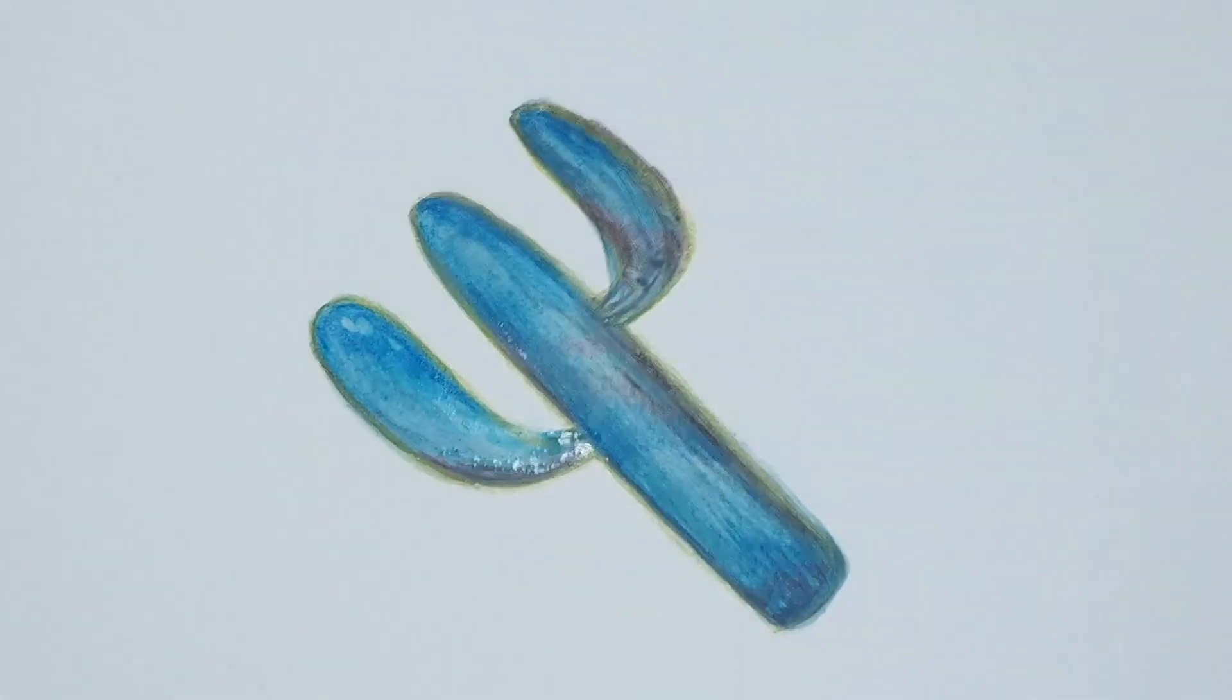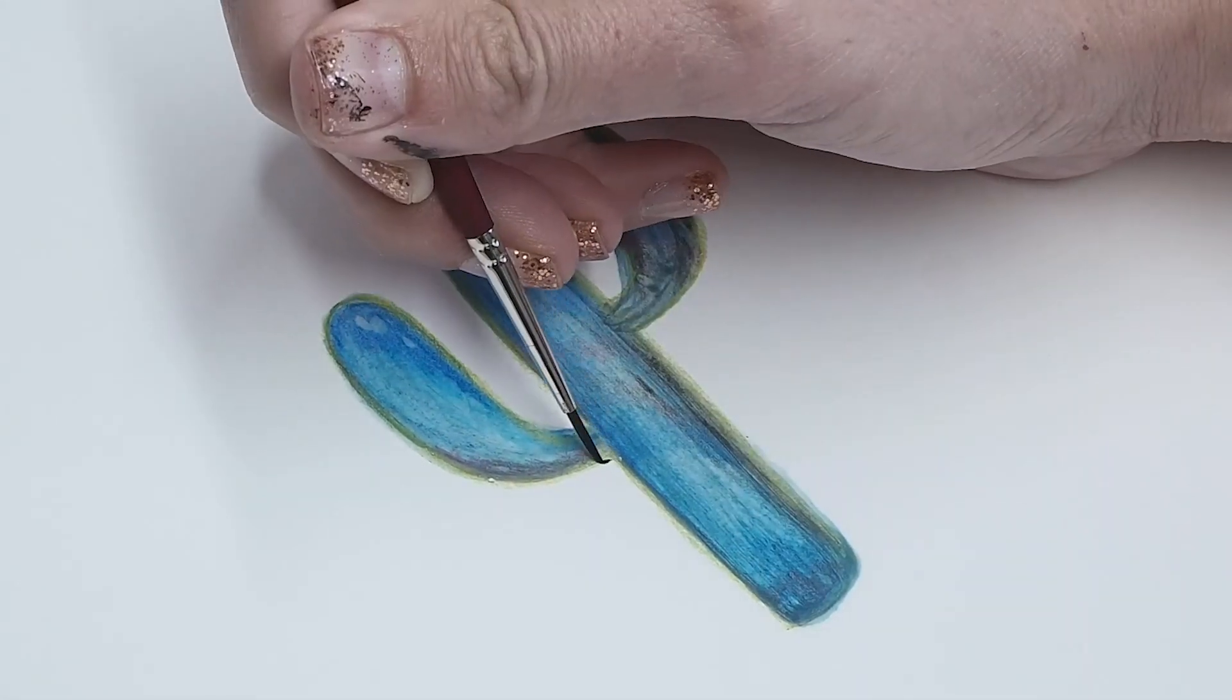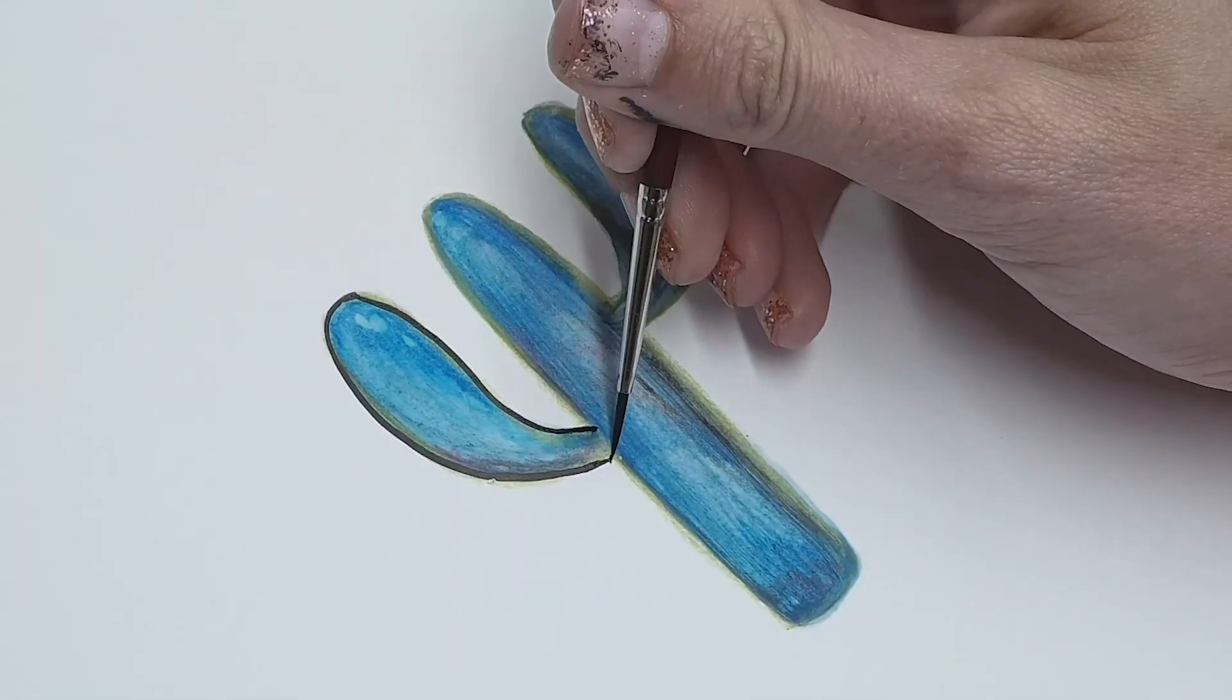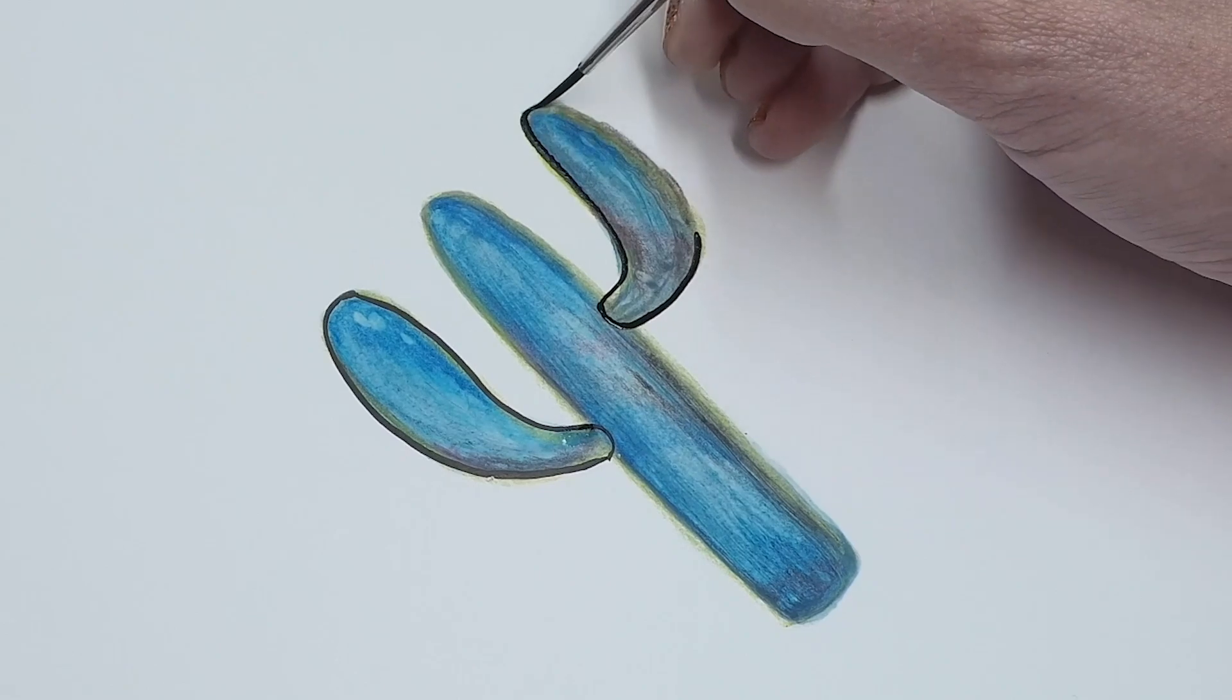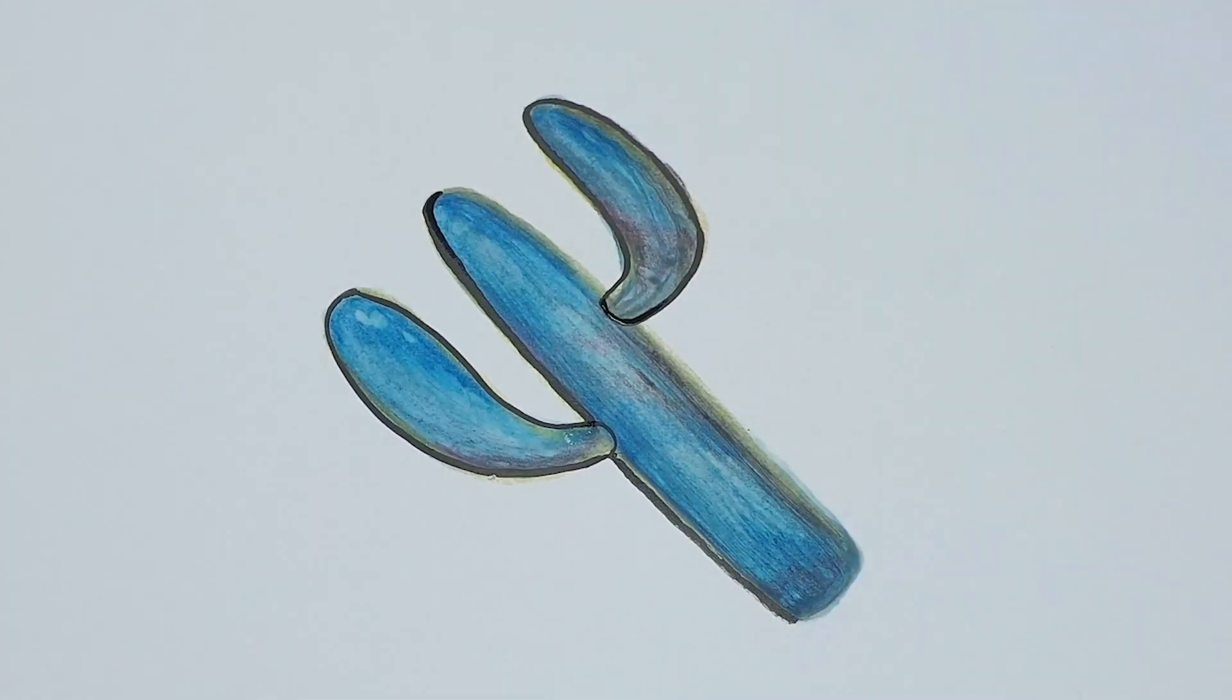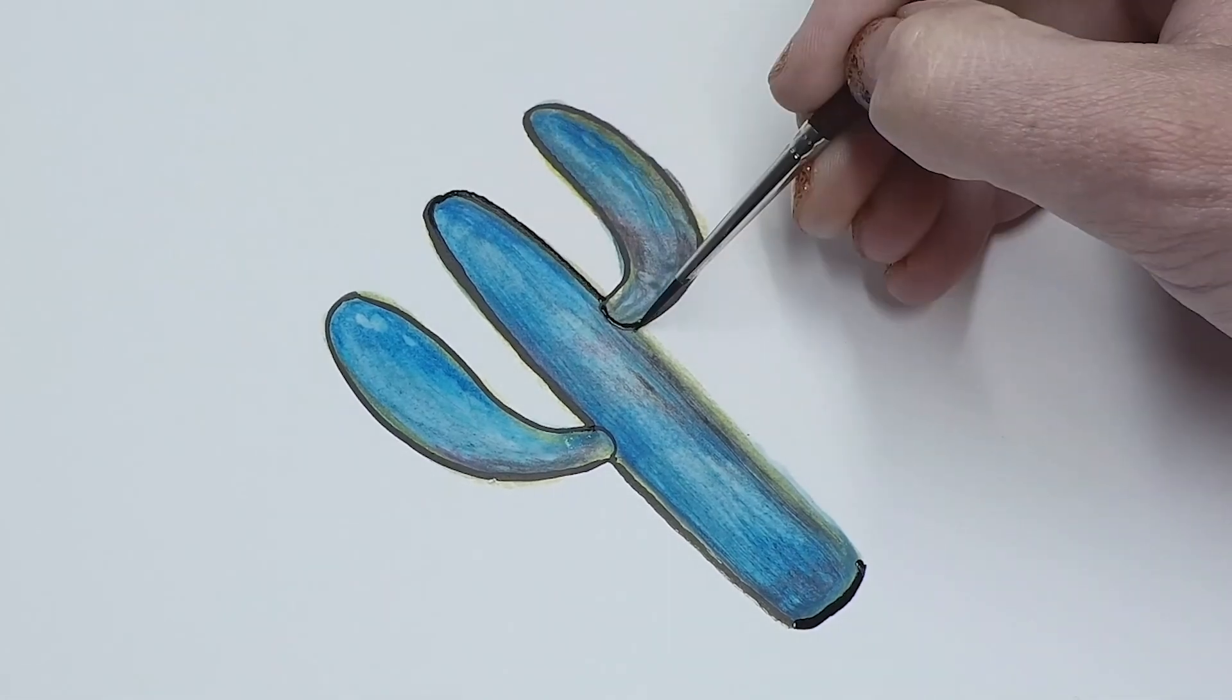Let that painting dry and take the black ink and your small size one brush and come in and outline the cactus with that ink. I would do this very slow and steady, that way you don't mess up.